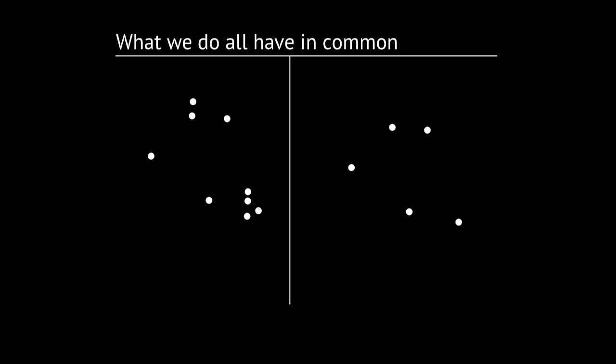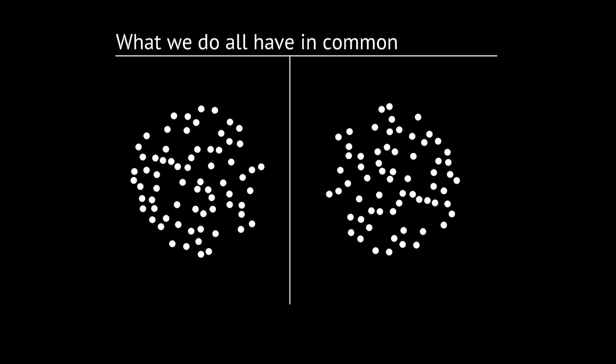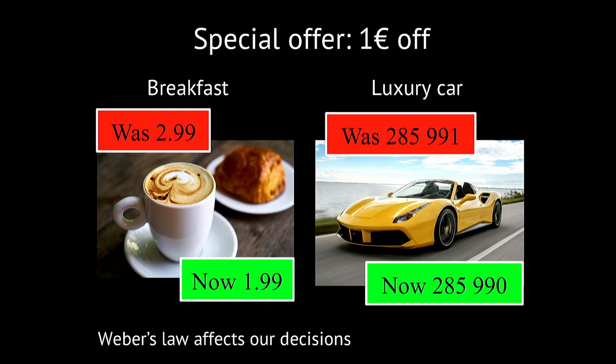If you have to tell the difference between two sets of dots, then you can do it easily when the numbers are small, like here. But when you increase the numbers, this becomes increasingly more difficult. And this is something that is relevant for our decisions, of everyday decisions, and because it is shared with other animals, we can imagine that it has a relevance also for their own decisions.